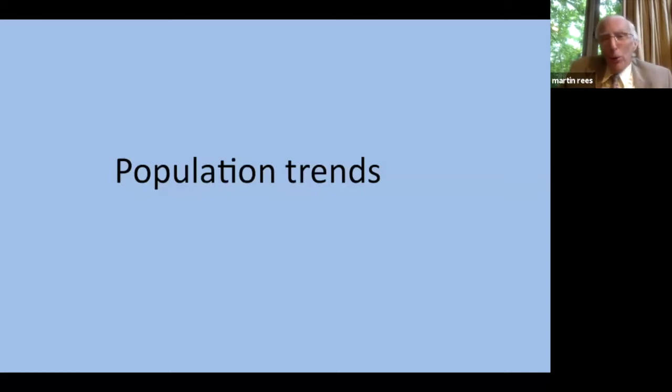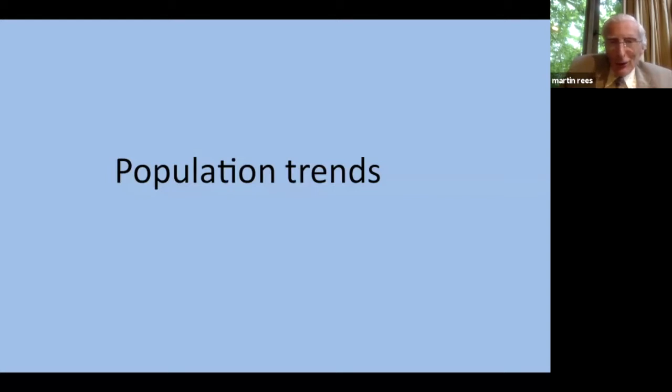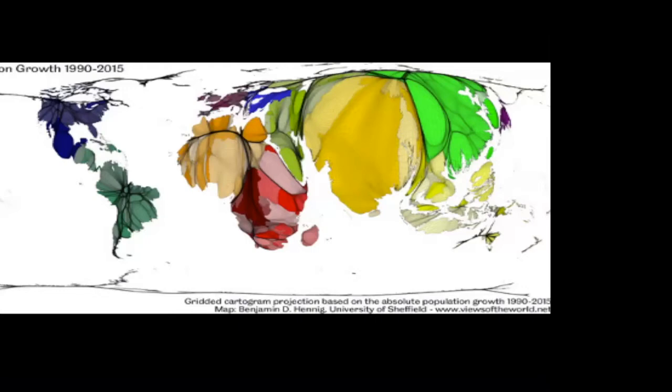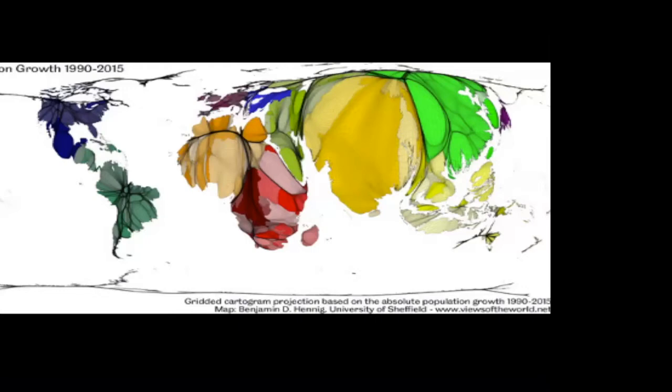50 years ago, the world population was about 3.5 billion. It's now about 7.8 billion. The growth has been mainly in Asia and in Africa. And this distorted map gives each country an area proportional to the population growth in the last 30 years. The number of births per year worldwide was going up fast, but it's now peaked. And it's actually now going down in most countries.